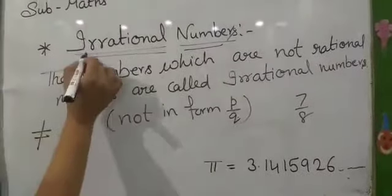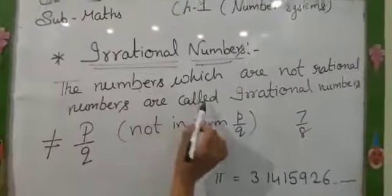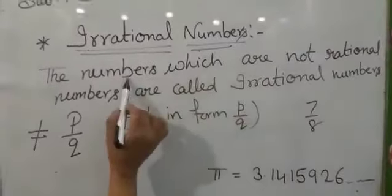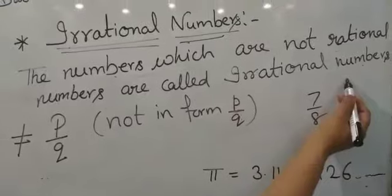Now we will do the irrational numbers. The numbers which are not rational numbers are called the irrational numbers.